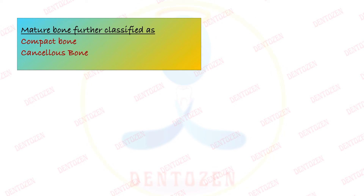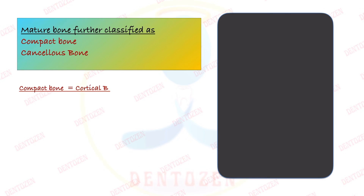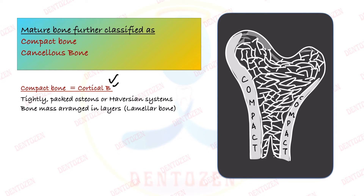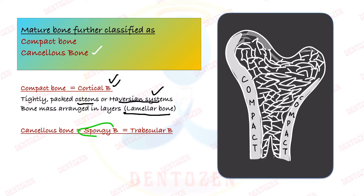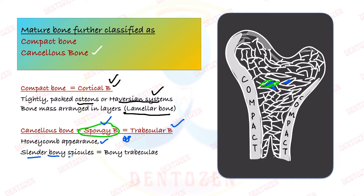Mature bone can further be classified into two types: compact bone and cancellous bone. Compact bone is also known as cortical bone, with a particular arrangement called osteons or Haversian systems. Cancellous bone is also known as spongy bone because it resembles a sponge — it has bony trabeculae with spaces in between, giving it a honeycomb appearance. The slender thin bony spicules are called bony trabeculae, which is why it is also called trabecular bone.